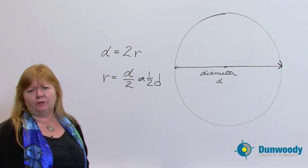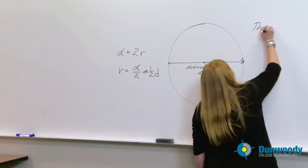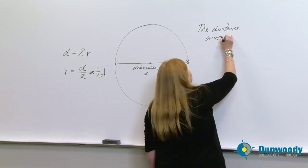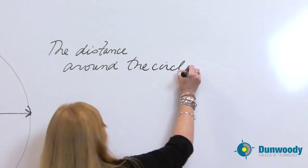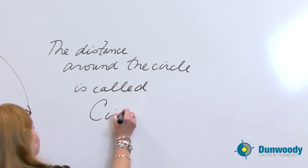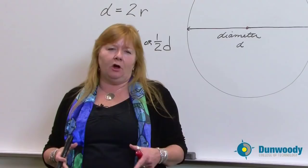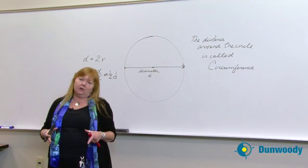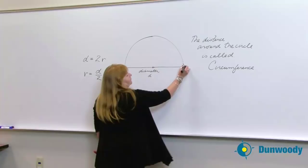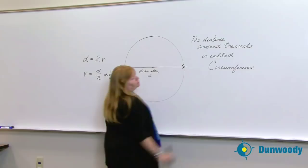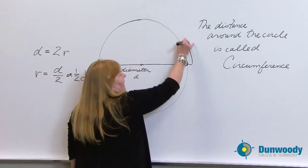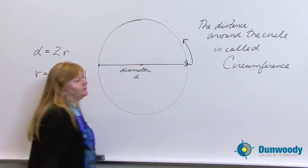So before I even get into that, let me introduce you to another word in our language. The distance, and I'll write it up here, the distance around the circle is called circumference. Circumference is like perimeter of a rectangle. Walking around a rectangle, we call that the distance, we call that distance perimeter. But walking around the circle is called circumference. Circ right here means circle. And each of our objects that we look at in mathematics has their own speak.